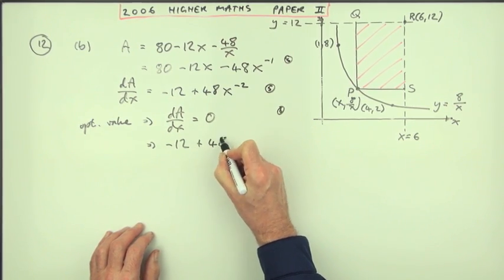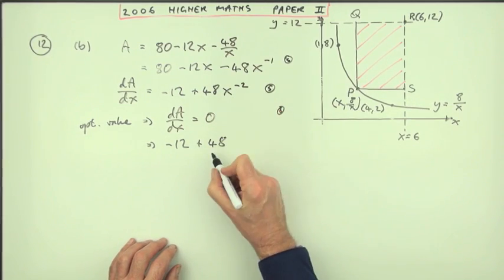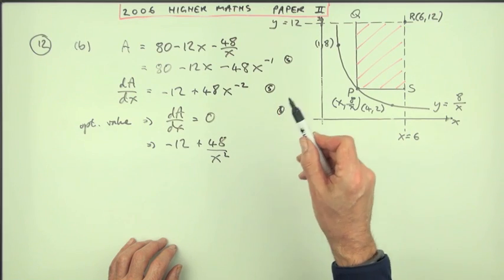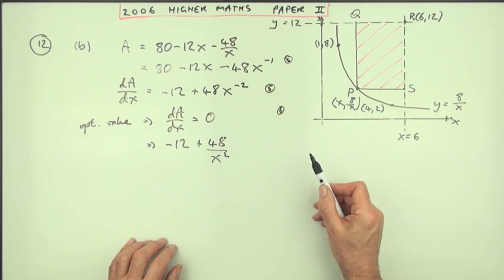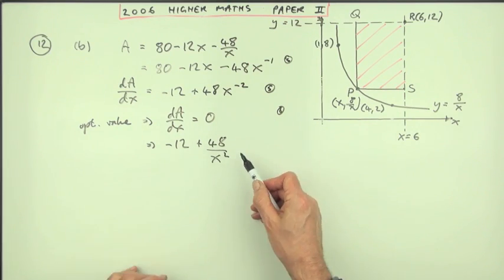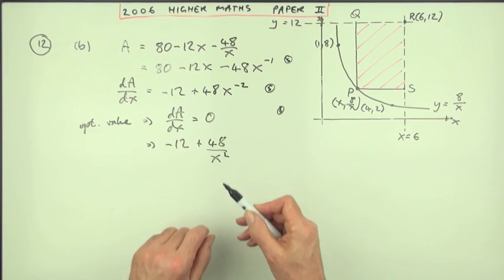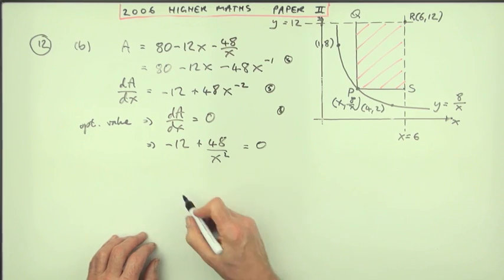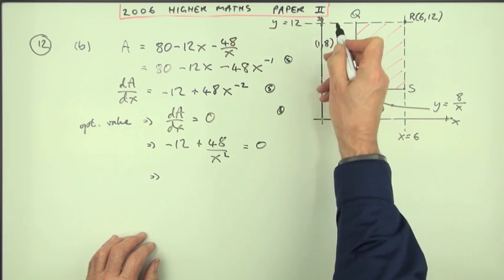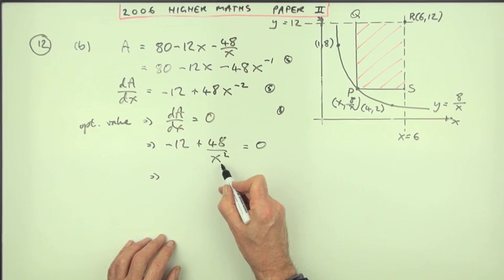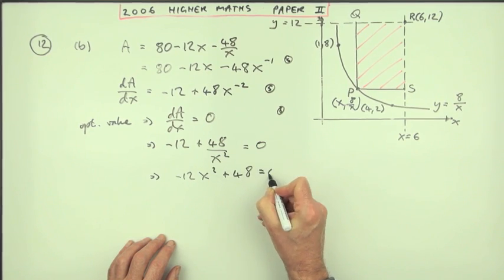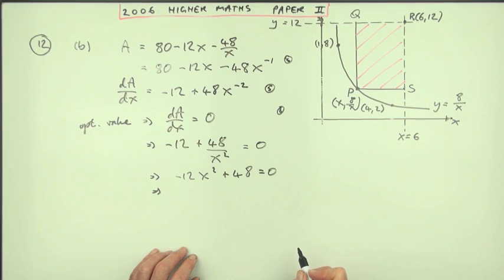So solving the equation: that means that negative 12 plus 48—and now I'm going to rewrite that as over x squared. Put it into index form by all means in order to carry out a differentiation or integration, but if you're actually going to use it for an evaluation or an equation, put it back the way it was. So that should equal 0. Now there's only one mark for actually solving this for x. So the first step will be multiply that. Notice that x can't be 0, so it didn't apply in this case anyway because x was never 0. Multiply by x squared and you've got negative 12x squared plus 48 equals 0.